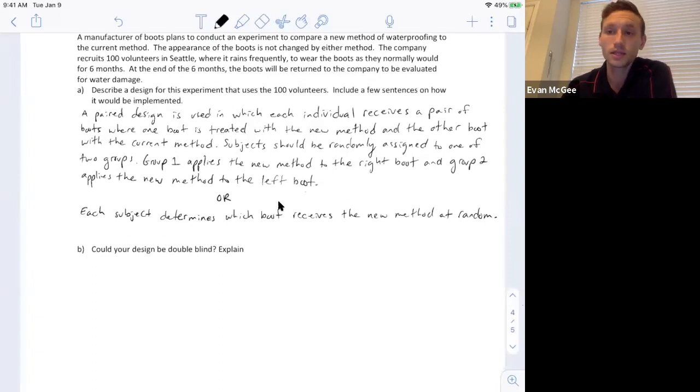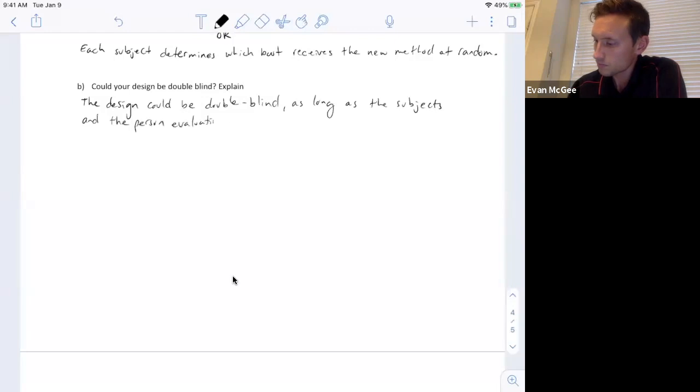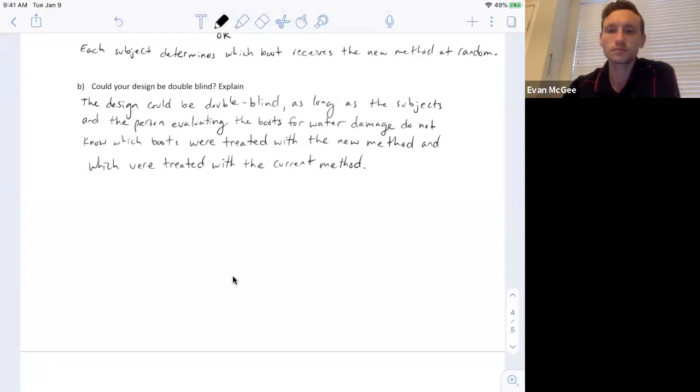So could our design be double blind here? And yeah, it could. The only way we could make it double blind is if the person who's wearing the boots doesn't know which boot has the new method and which boot has the current method. And then the person who is comparing, it says at the end they will compare and measure the water damage so that whoever is measuring the water damage at the end would also have to not know which boot received which treatment.